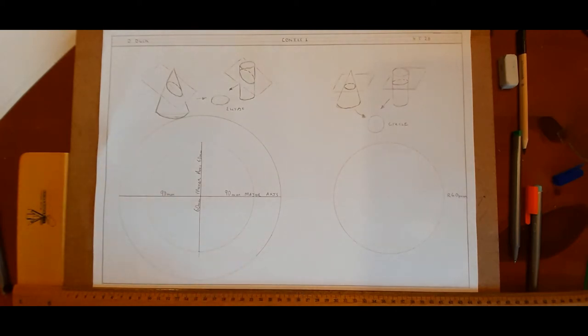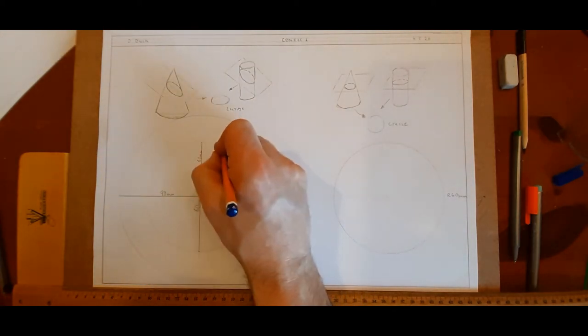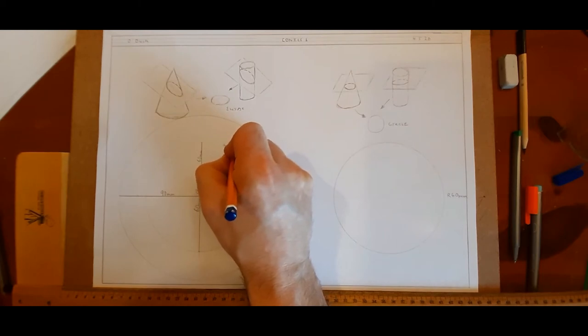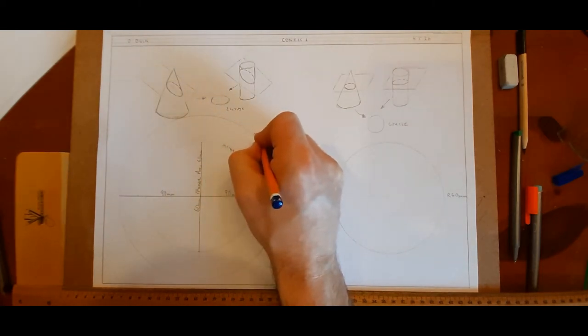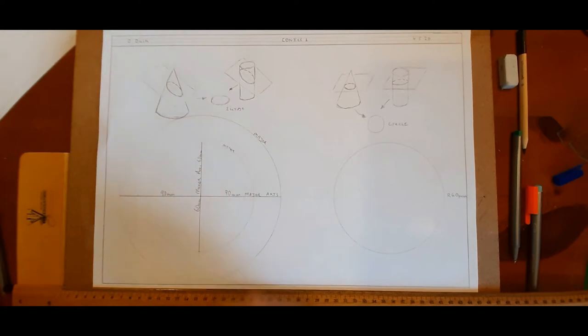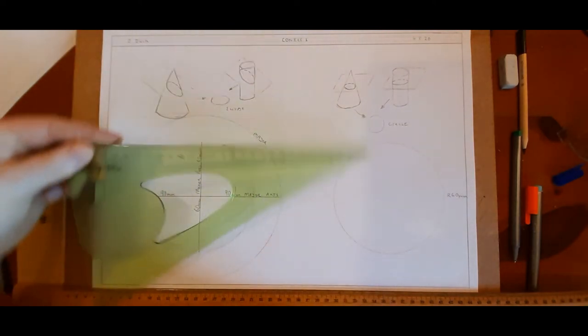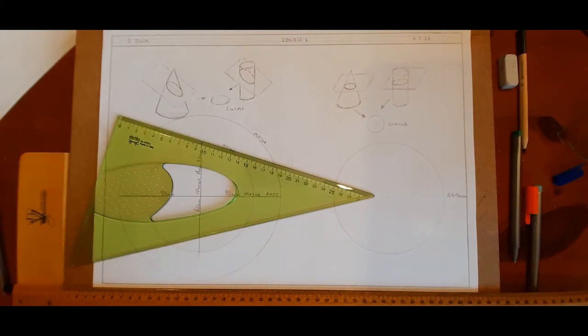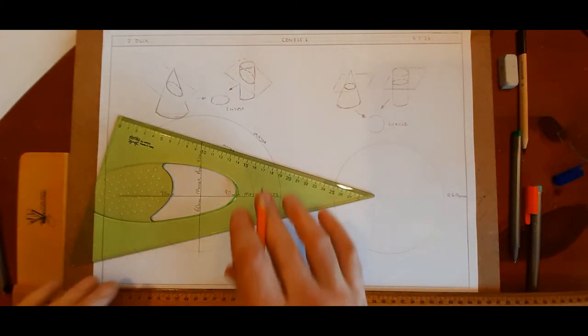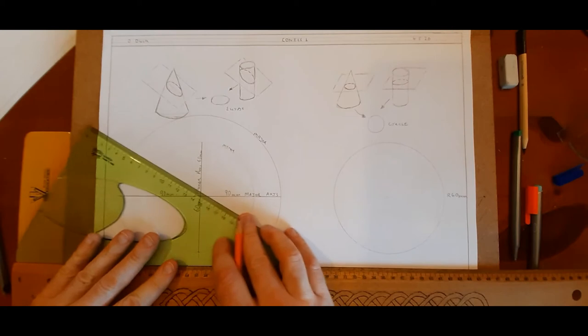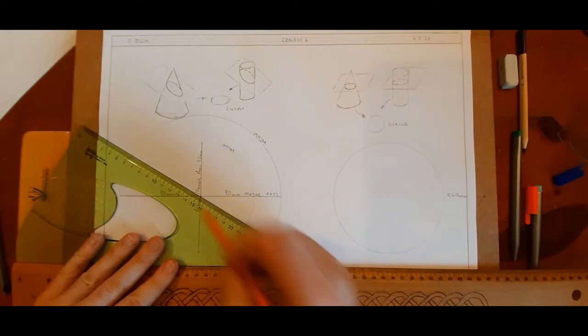You'll do them fairly lightly. I might do them a bit heavier just to make sure they're seen. So there we have our two circles. Two lines, two circles. That's the minor circle and this is the major over here. As I said, we have two lines and two circles. The next thing we're going to do is we're going to get our 60-30 set square because I want to divide these circles up into 12 equal parts.